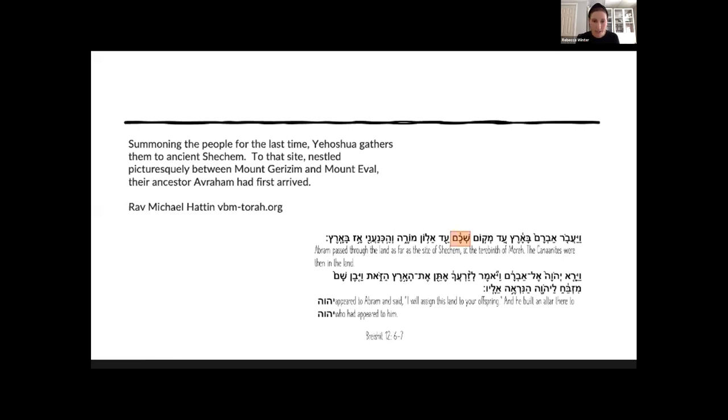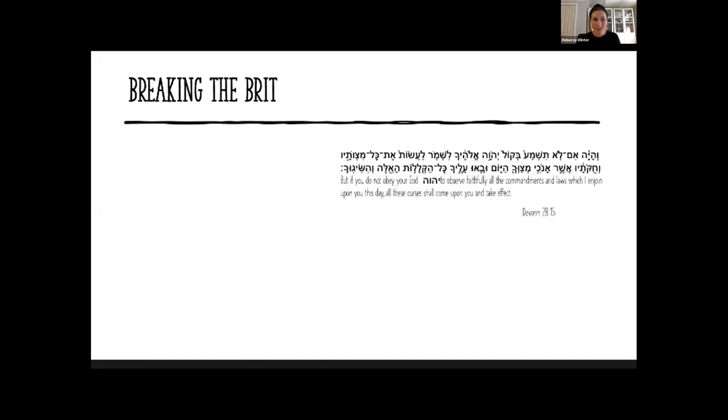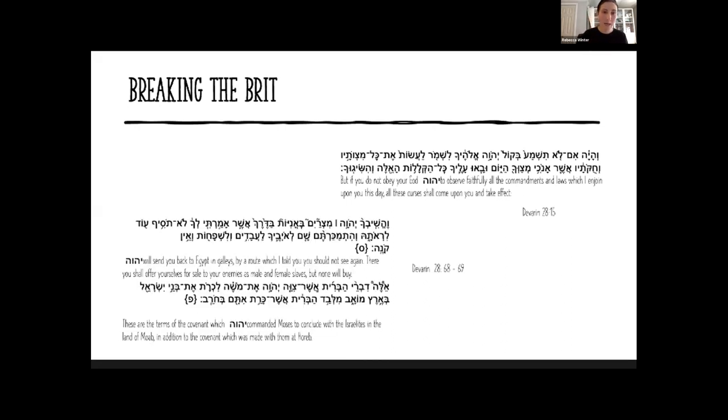What he's reminding them of is it's true this Brit Bein HaBetarim is fulfilled and we are the manifestation of this fulfillment. He's almost saying to B'nei Yisrael, but we also have a role in this Brit. It's not a one-way street that Hashem will just keep saving us, but we have to remember our role as being Ovdei Hashem. Yehoshua is actually very savvy in the way he sets this up. It says, 'Vayichrot Yehoshua brit la'am bayom hahu, vayasem lo chok u'mishpat b'Shechem' - he brings them to Shechem where he buries Yosef's bones.